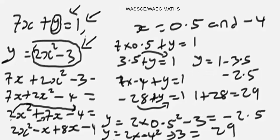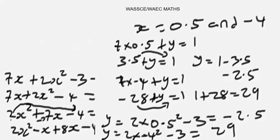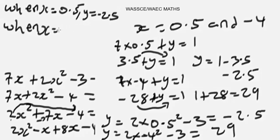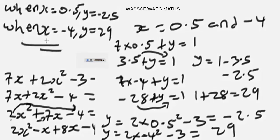Finally, since this question involves a quadratic expression, we have two respective solution pairs for x and y. When x = 0.5, y = -2.5; and when x = -4, y = 29. That is how you represent the answer, and that's the idea behind solving simultaneous equations involving quadratic expressions.